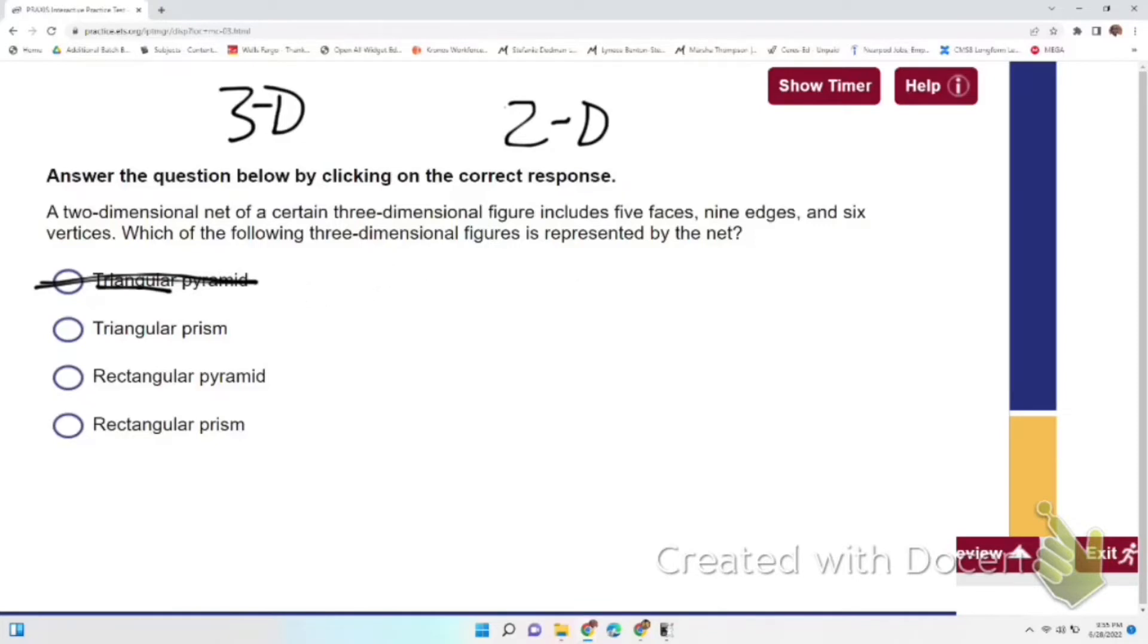A triangular prism has two bases to an extent and then rectangle faces that lead from one base to the other. So this net will look like that right there.